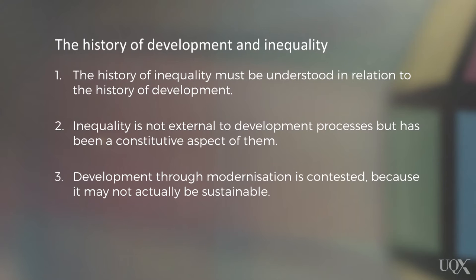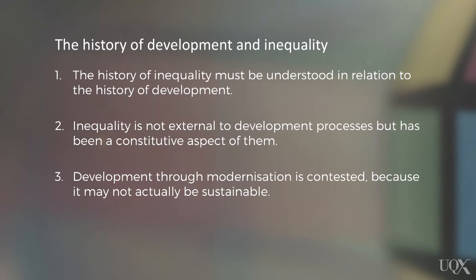Sahlins challenges us to think of sustainable development differently. With this in mind, we can now turn to three related critical observations about the history of development and inequality. One, the history of inequality must really be understood in relation to the history of development. Two, inequality is not external to development processes, but has been a constitutive aspect of them. And three, development through modernisation is contested, also because it may not actually be sustainable.